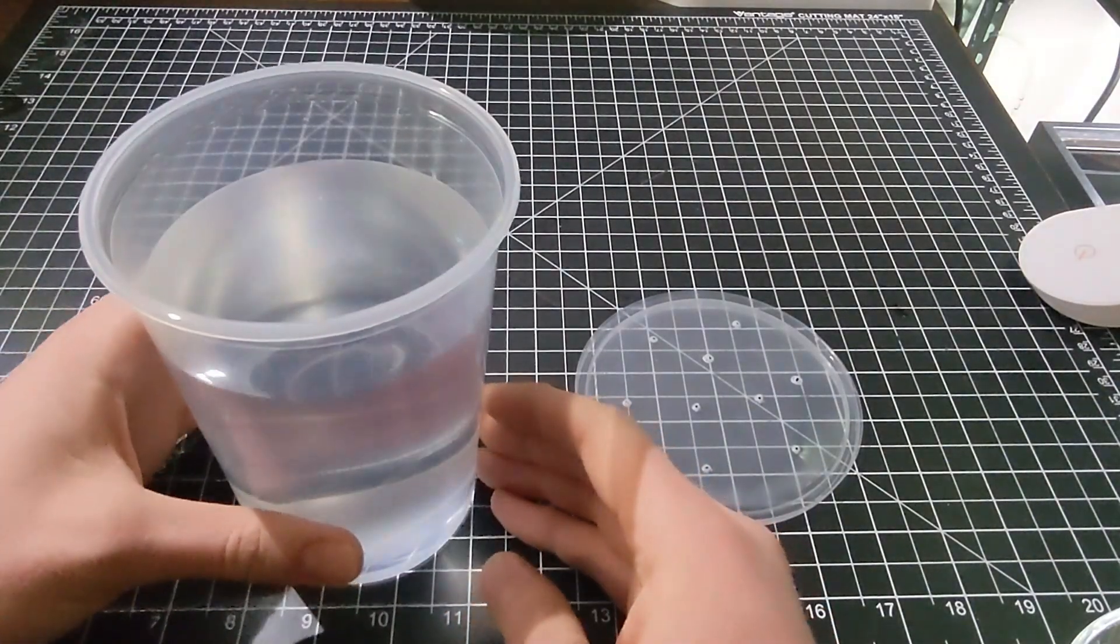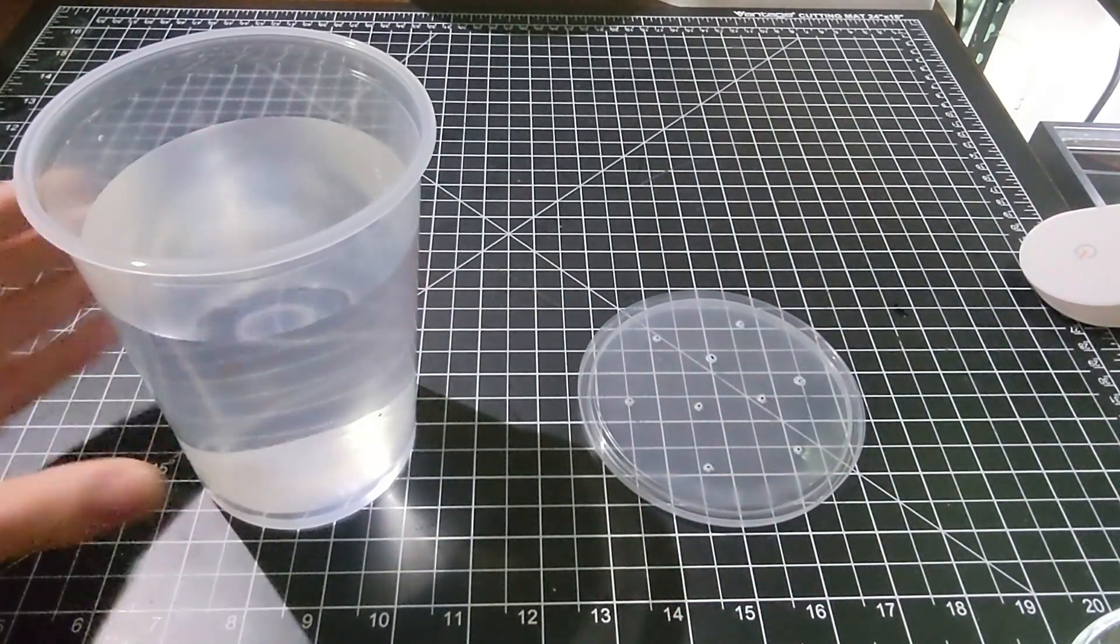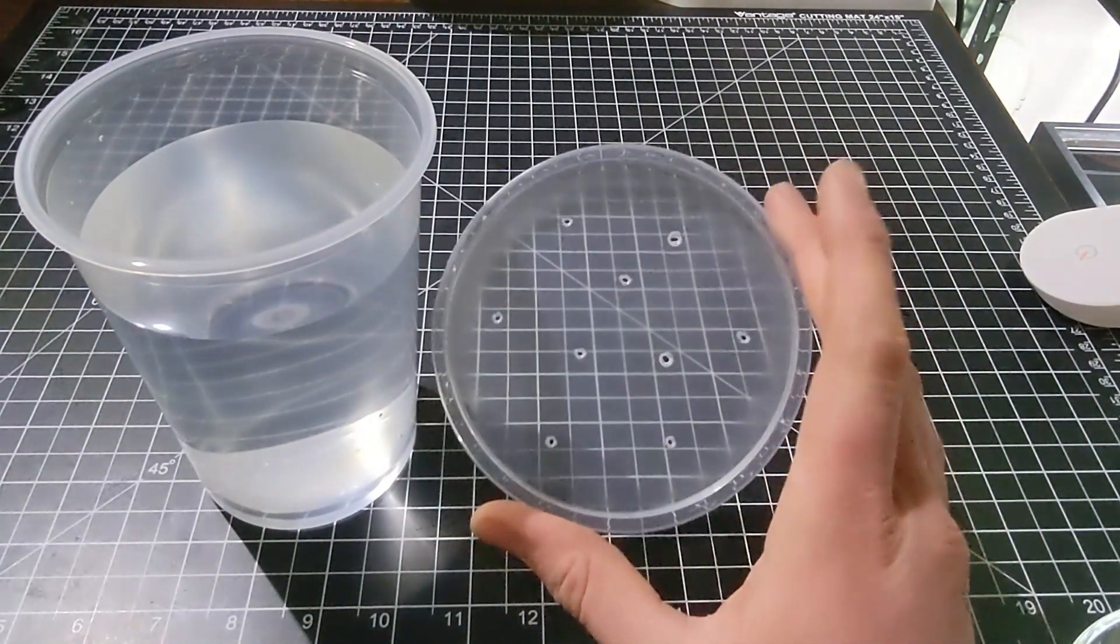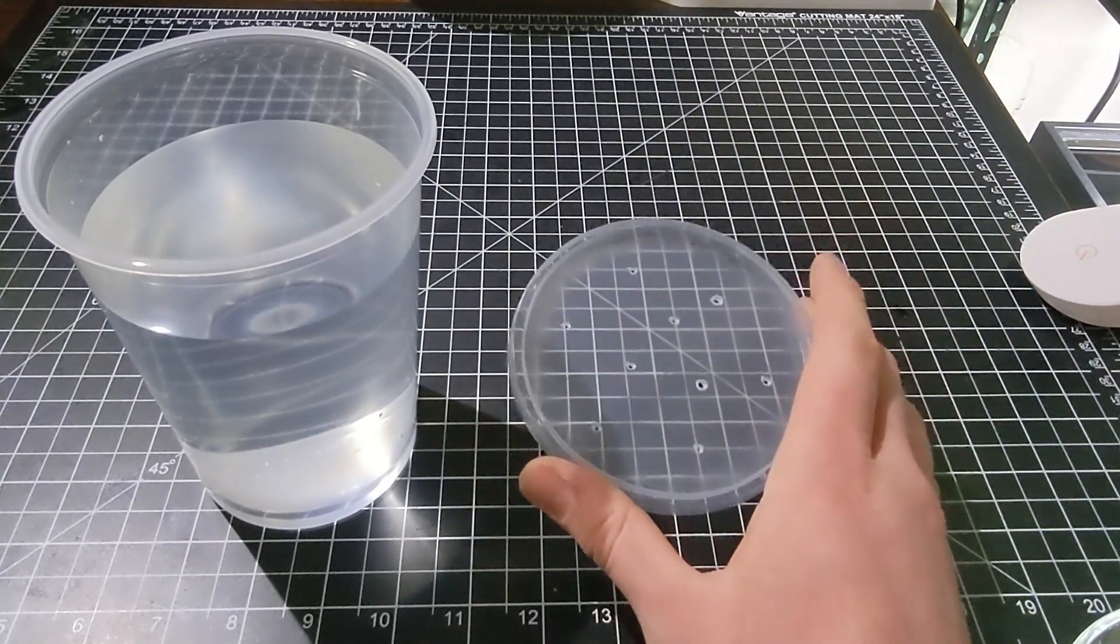Next thing you want is a container of at least 500 milliliters. This right here is a one quart deli cup, so it's a little more than that. Should have a lid that you can poke holes in for some ventilation but won't let bugs or any other pests in there.